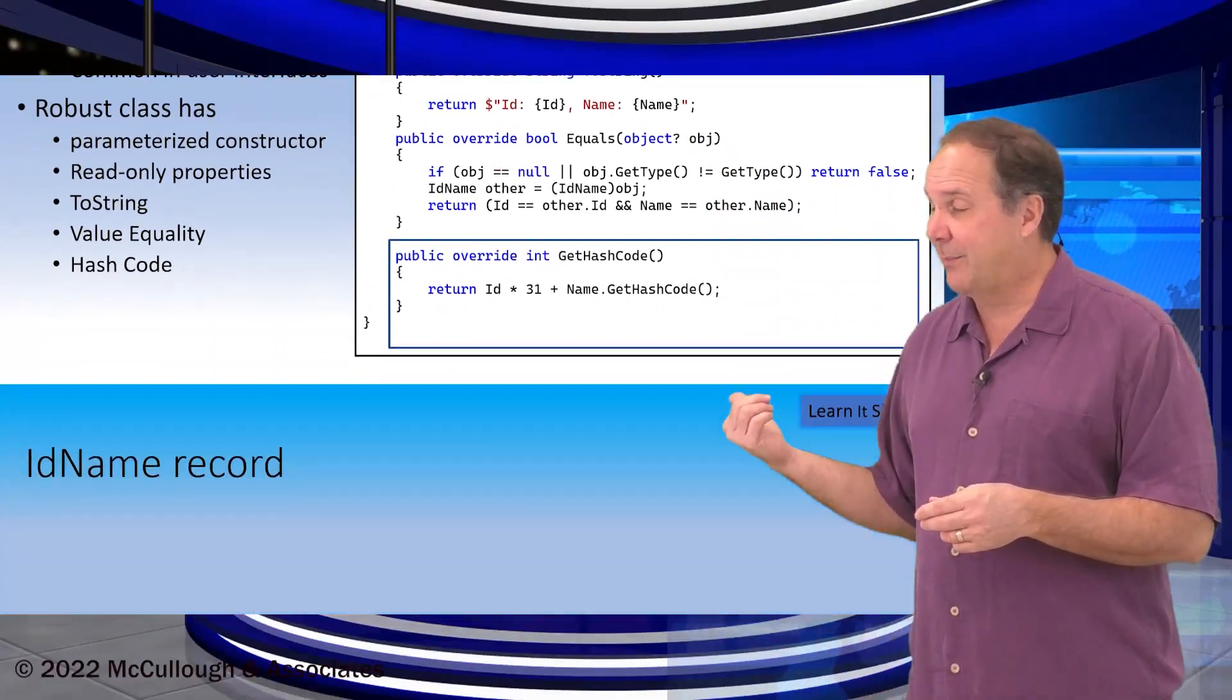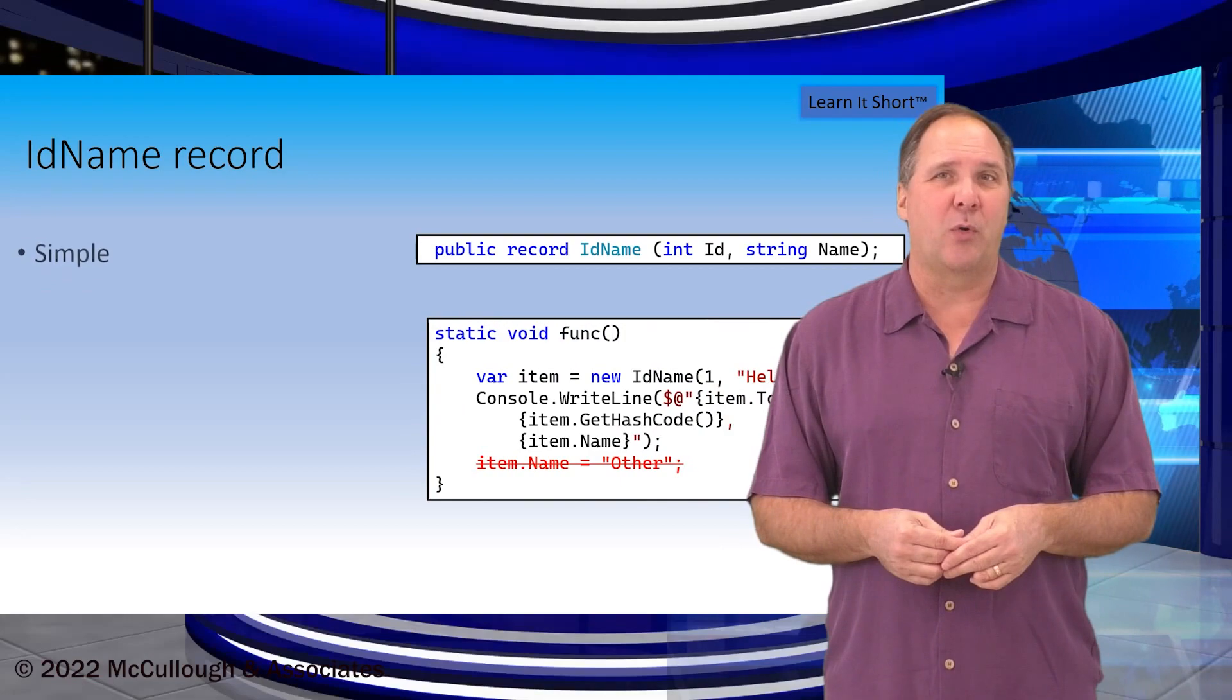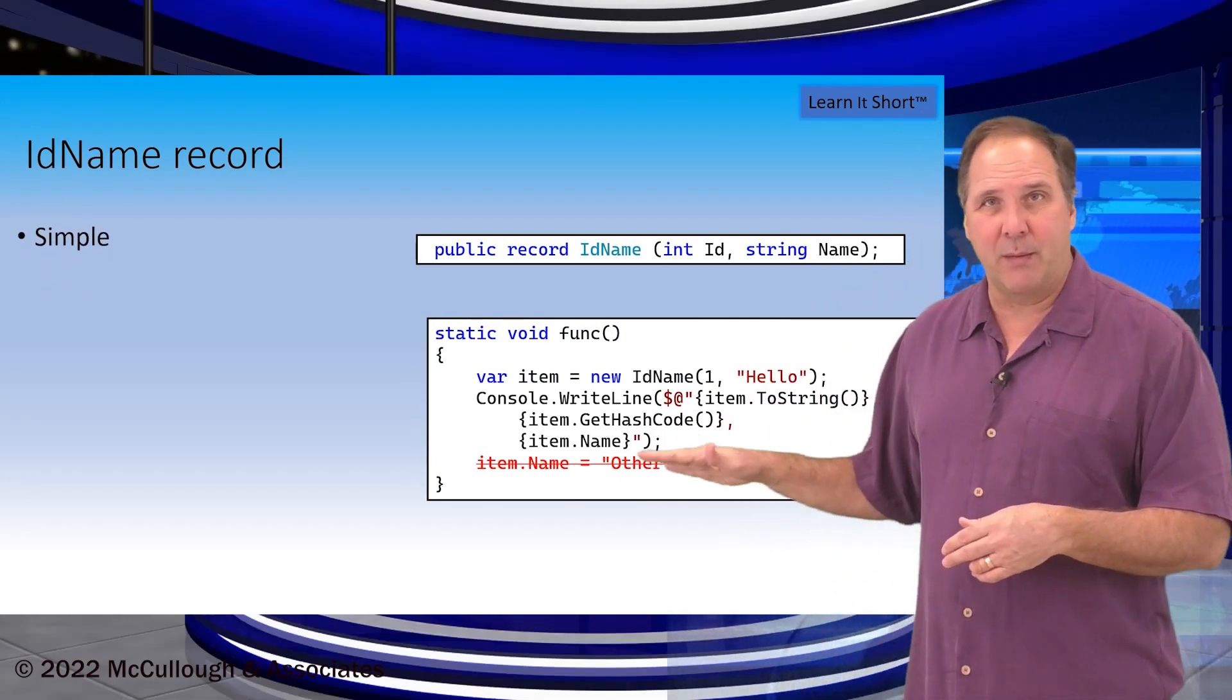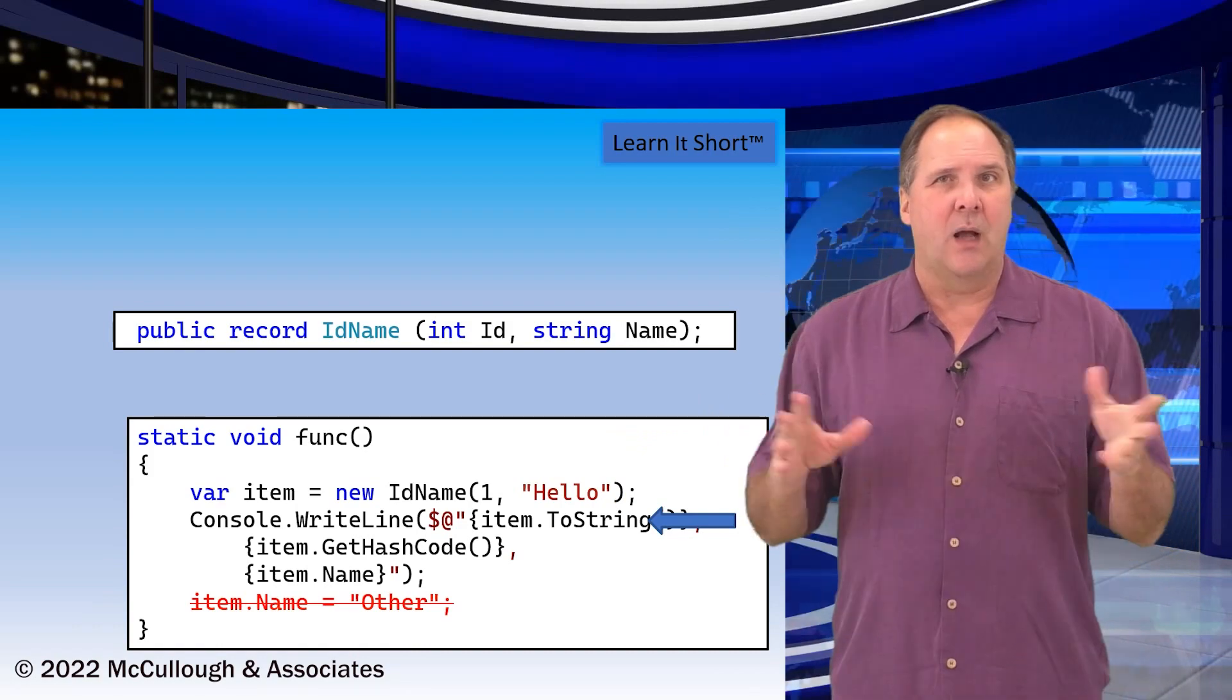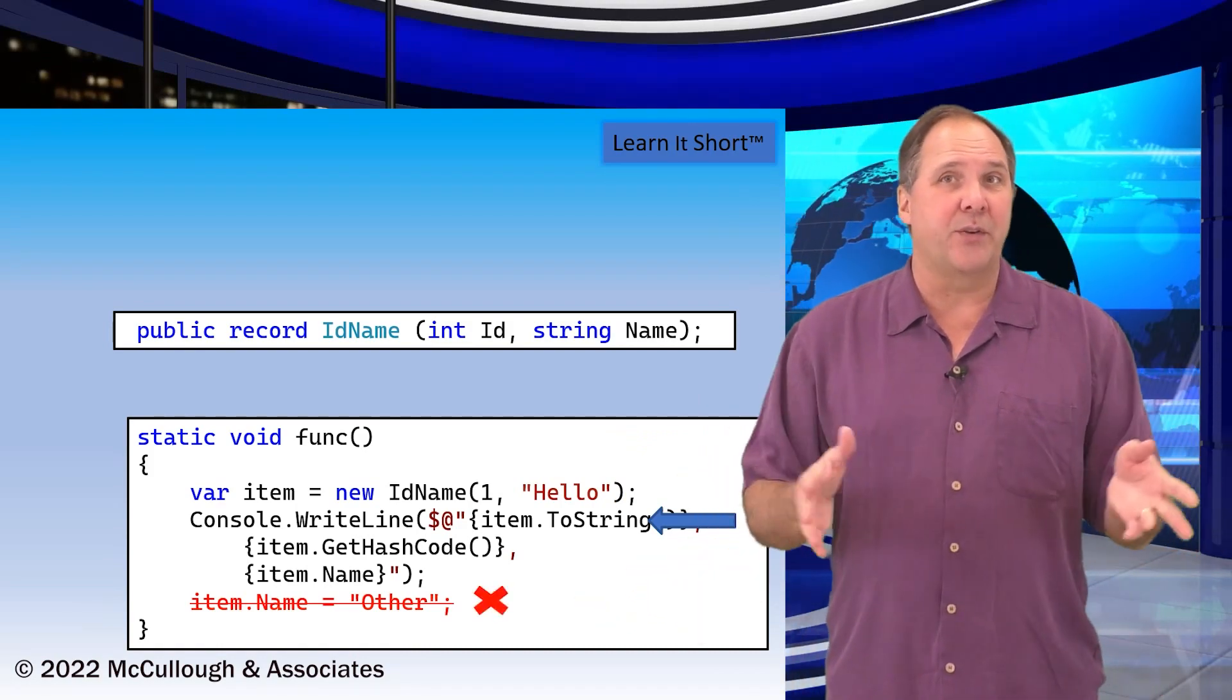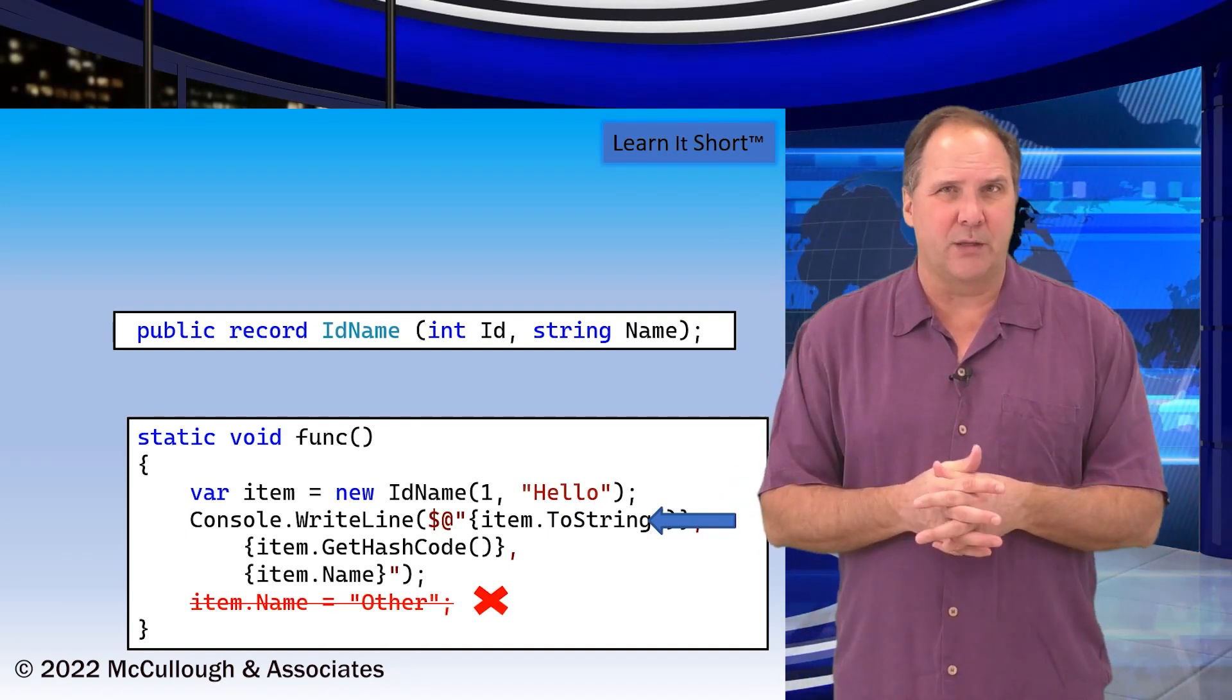On the other hand this simple record declaration provides all of those same robust features automatically and as you can see in the example where we're using it its usage is pretty straightforward. In fact we get a parametrized constructor. We can see on the last line of the example that we're not allowed to make changes to the record object because it's immutable by default.